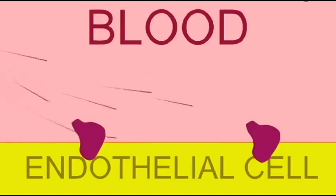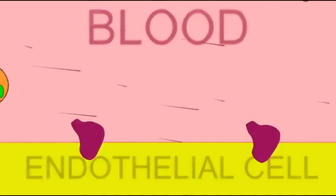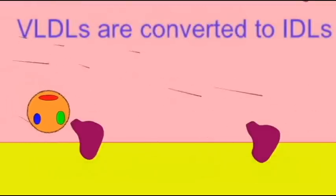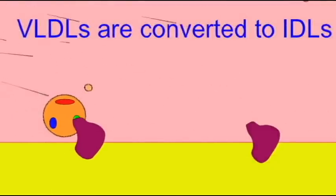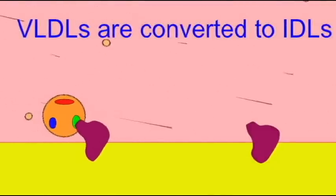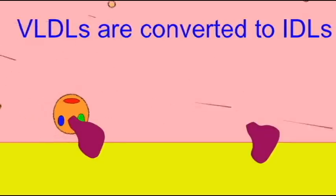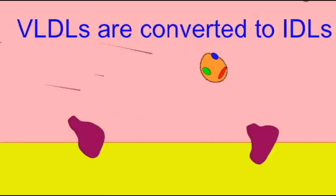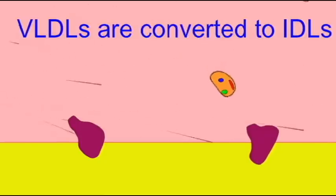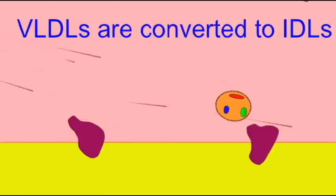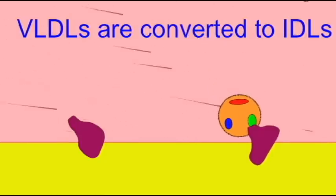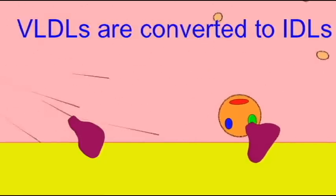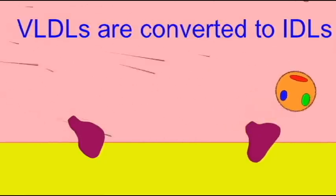As the VLDL travels through the blood, once again it can bind to lipoprotein lipase, the enzyme on endothelial cell linings, and fatty acids can be released. The VLDLs become smaller, becoming IDLs, intermediate-density lipoproteins.